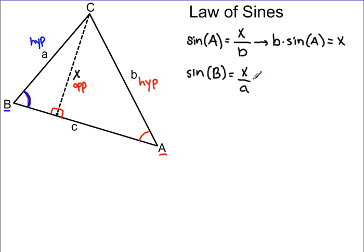And let's do the same thing. Let's solve this equation now for this altitude X. So we'll multiply both sides of the equation by A and we'll get the following. So A times the sine of angle B will equal X.